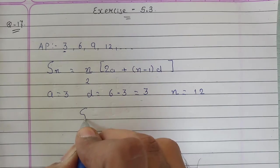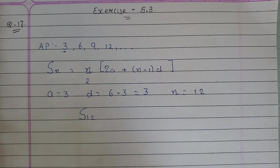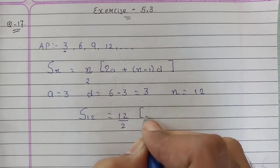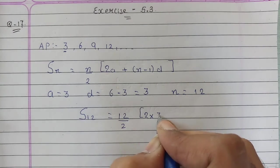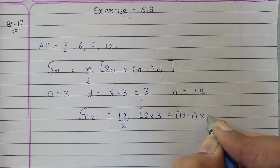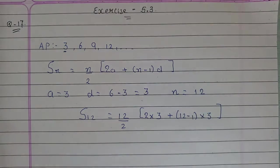Now we have to find S12. Using the formula: 12 upon 2, times 2 into A which is 3, plus 12 minus 1, times the difference which is 3.